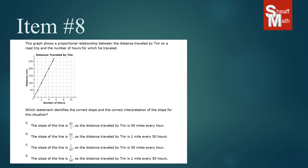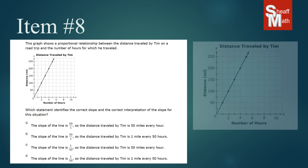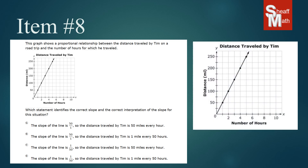The question asks which statement identifies the correct slope and the correct interpretation of the slope for this situation. Let's take a closer look at the graph. You can pick any two points on that line and make a slope triangle. It doesn't matter which two points you pick. I'm going to choose (0, 0) and (2, 100).